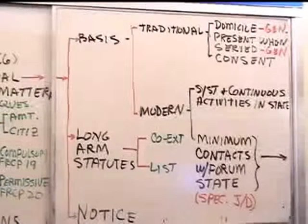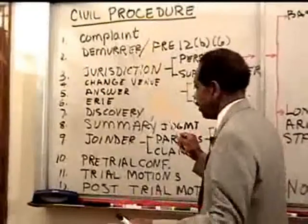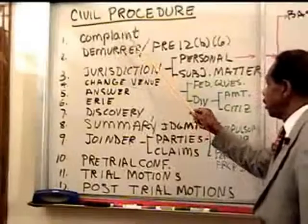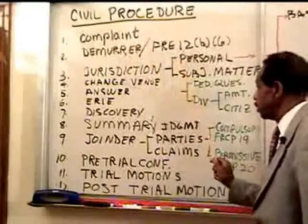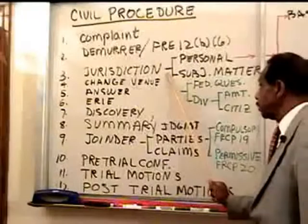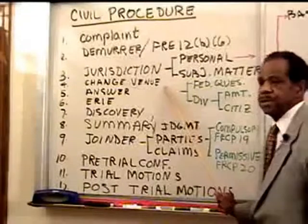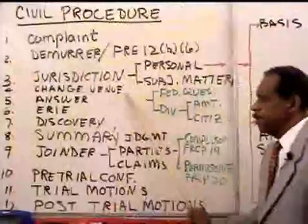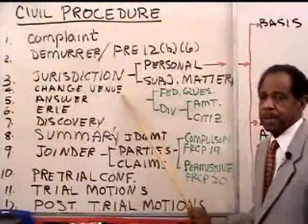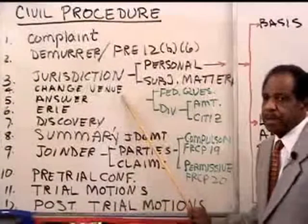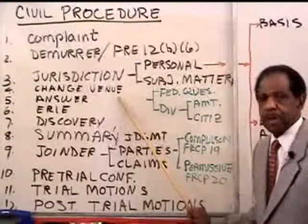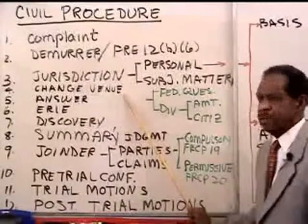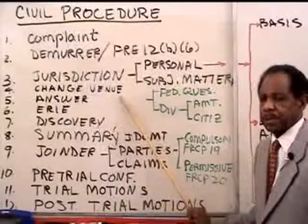Getting back to our basic structure: in a civil procedure process going from beginning to end of a court case — complaint, demurrer or 12(b)(6) motion, jurisdiction. Then there may be a motion to change venue. Even if the court has subject matter and personal jurisdiction, there may be other courts that also could have subject matter and personal jurisdiction, and there may be a motion to change venue to one of those other courts. The rules about that need to be considered.